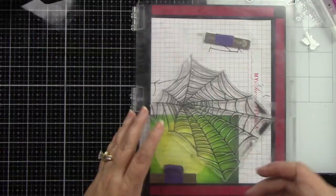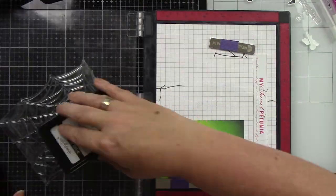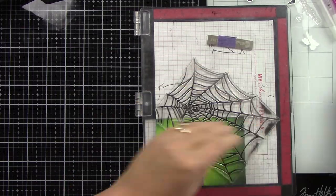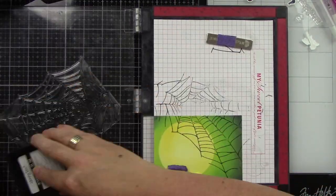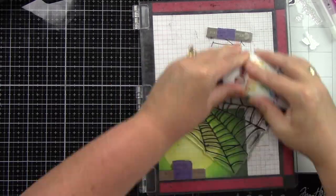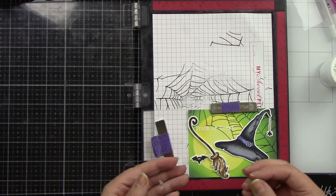In my MISTI, I have the spiderweb from the Happy Halloween stamp set. I'm going to ink that up with black ink over part of the moon. I want it to look like the moon is further back—you're kind of looking through this spiderweb.